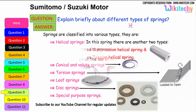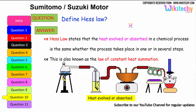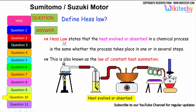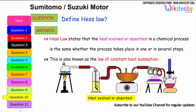Define Hess's Law. This is one of the very important questions. In the case of generating heat between an object and emissions, Hess's Law states that the heat evolved or absorbed in a chemical process is the same whether the process takes place in one or in several steps. This is also known as the law of constant heat summation.